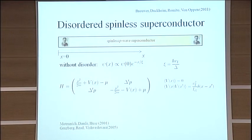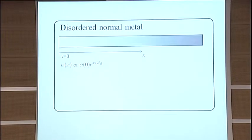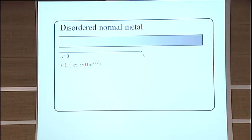So what do we know about a disorder potential? And I want to first answer that question for a disordered normal metal without superconductivity. And I want to ask the question, if I have a wave function and I know it at the end of the wire, what happens to it if you go into the wire?